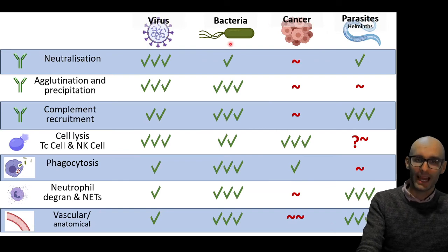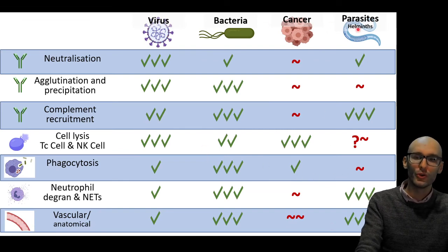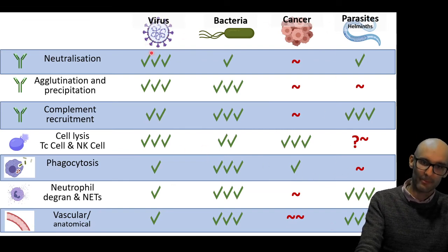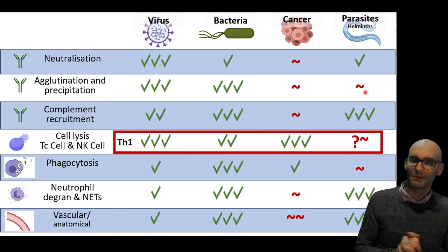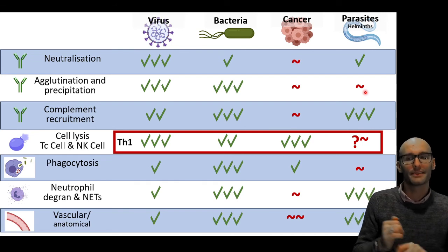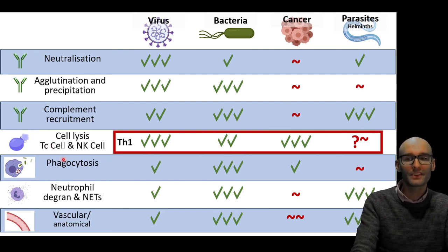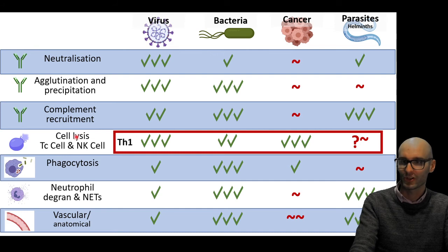So if we look at what does the TH1 response do in this figure, which I covered in the previous video, we can see that a TH1 response really helps with this, because it's causing the massive proliferation of cytotoxic T cells.